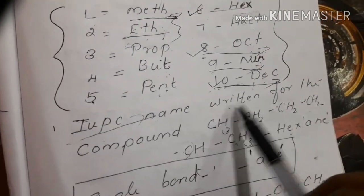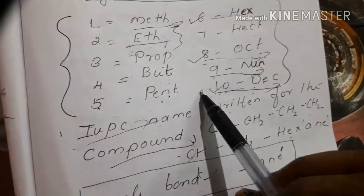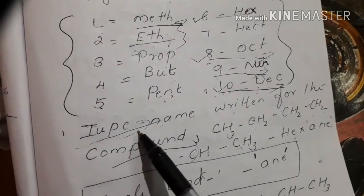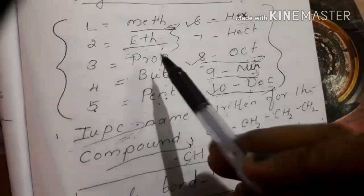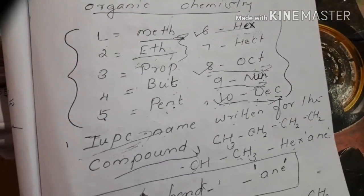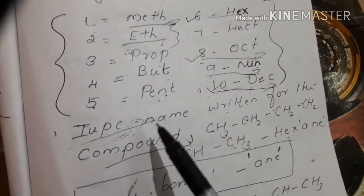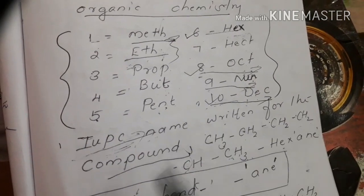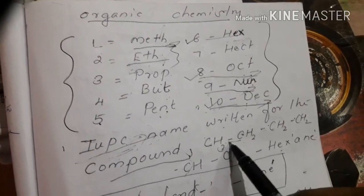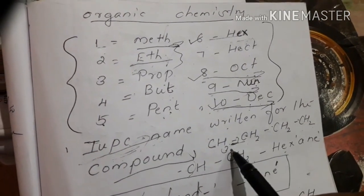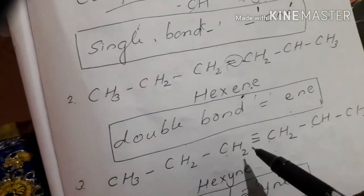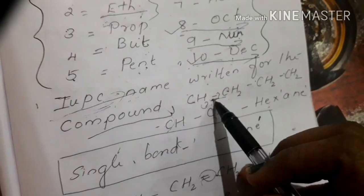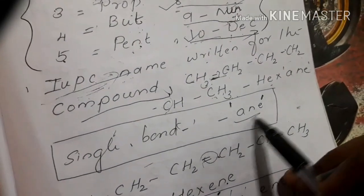The IUPAC name is written for the compound. We are going to show you the IUPAC name. The IUPAC name involves single bond, double bond, and triple bond. The single bond suffix means 'ane'.